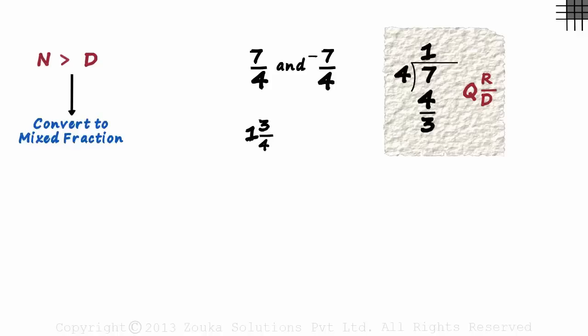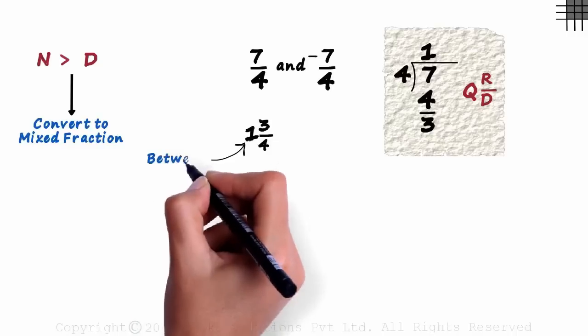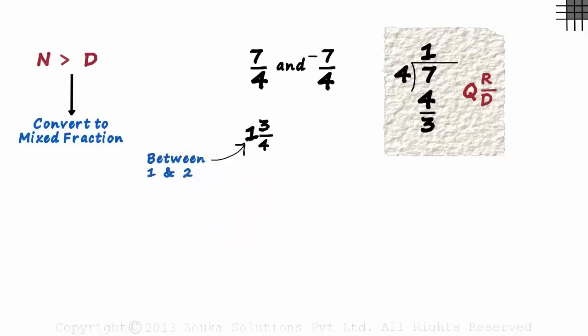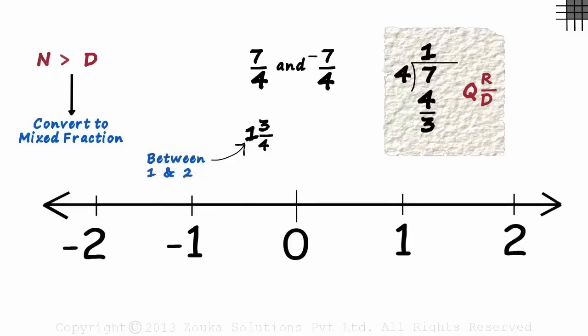The next whole number is 2. So we know that 7 by 4 is between 1 and 2. So we draw the number line accordingly with just 0, 1 and 2 marked.